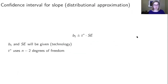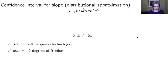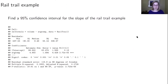Let's think about doing a confidence interval for the slope. In this case we're doing a distributional approximation using the t-distribution. We have our point estimate plus or minus our critical value times our standard error. The point estimate and standard error will be given to you from technology. The main thing you need to do is find the critical t-star value from a t-distribution with n minus 2 degrees of freedom. Let's try an example.